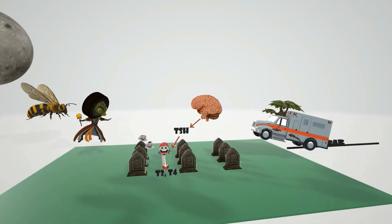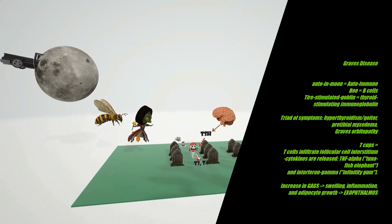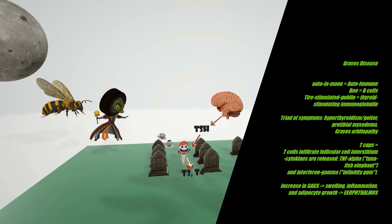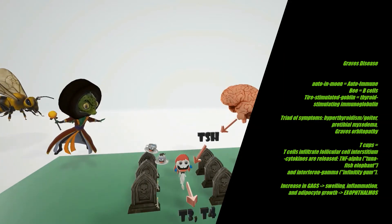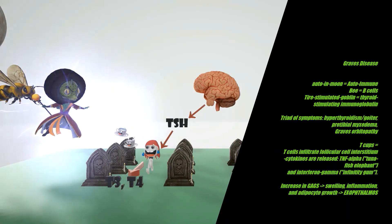Now let's talk about what happens in Graves disease. Graves disease is an autoimmune disorder — represented by the auto smashed into the moon — whose trigger is unknown. B cells release immunoglobulins, most prominently thyroid stimulating immunoglobulin (TSI), represented by the stimulated tire goblin. Thyroid stimulating immunoglobulin stimulates the TSH receptors on the thyroid, specifically acting on the follicular cells and telling them to pump out more T3 and T4.